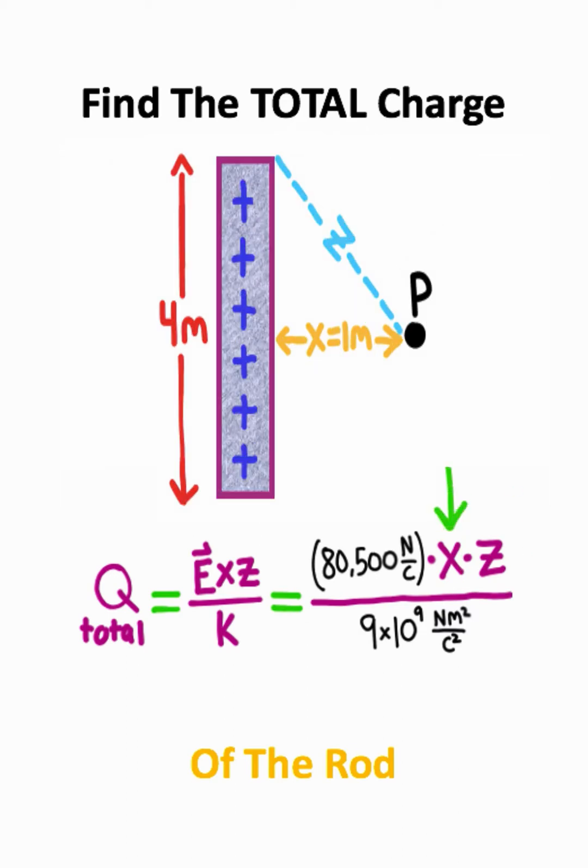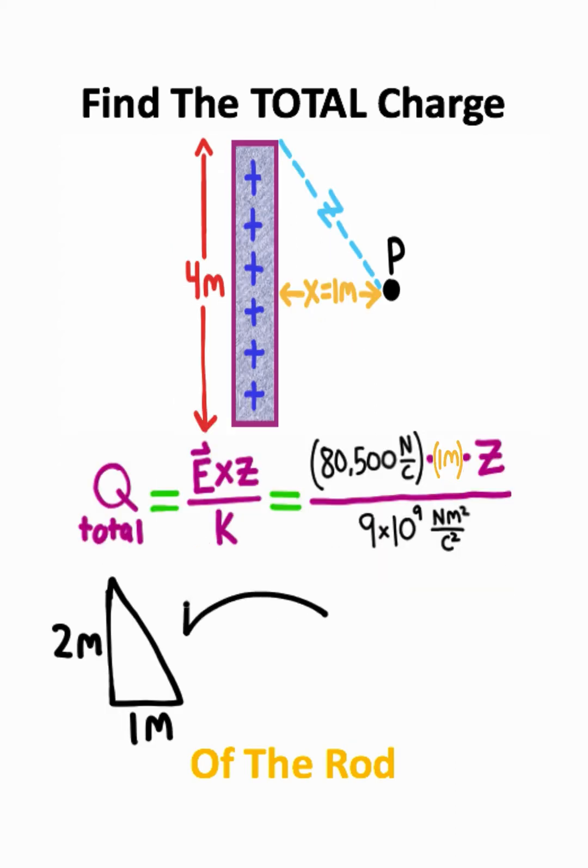To solve for z, you need to recognize that we have a right triangle that forms. The right triangle would look something like this, where we have a two meter length on the end here, since that length is going to be half of the length of the rod.